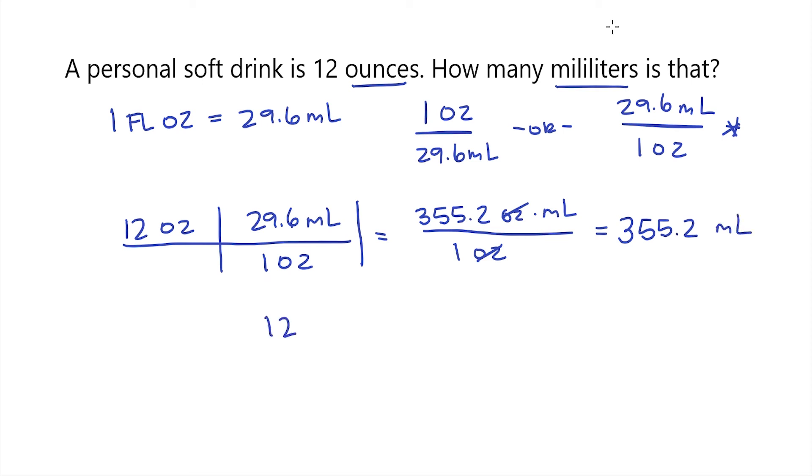So that means for every 12 ounces, that's going to be equal to 355.2 milliliters. And that is how you convert from ounces to milliliters.